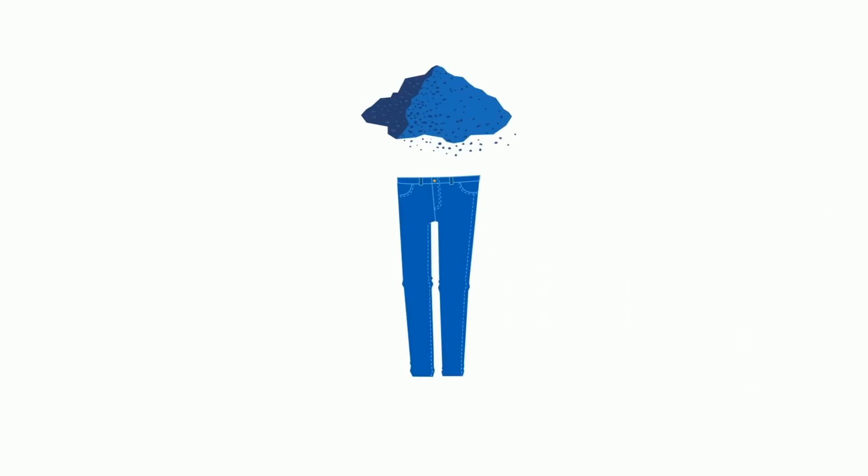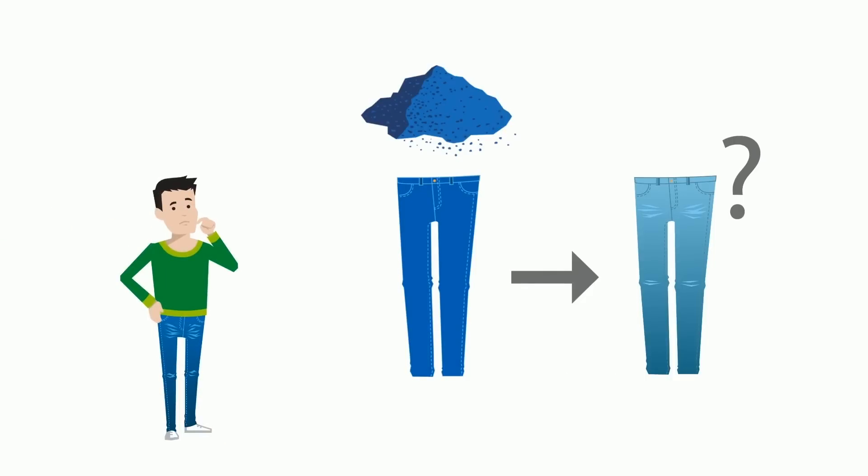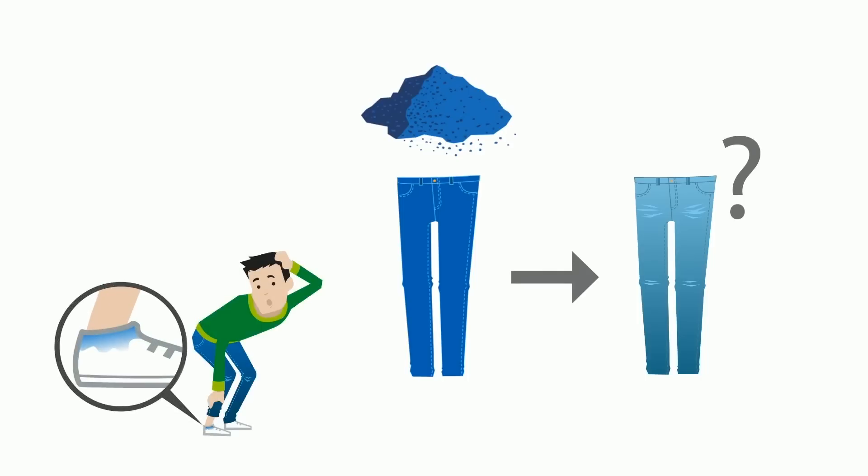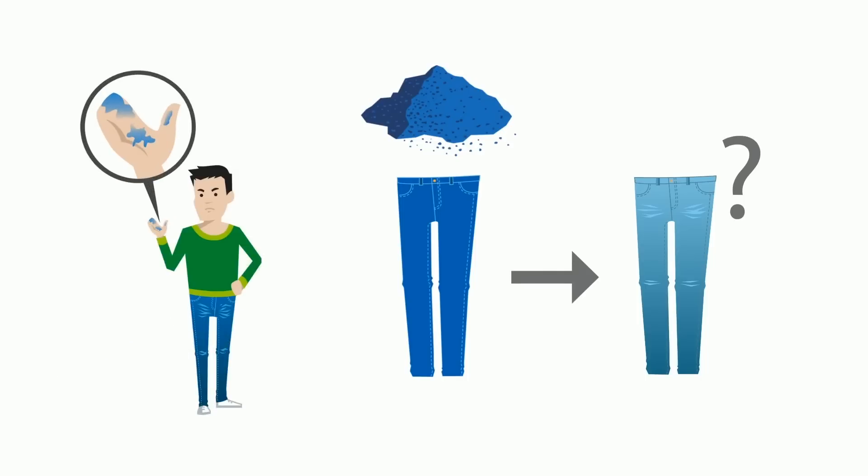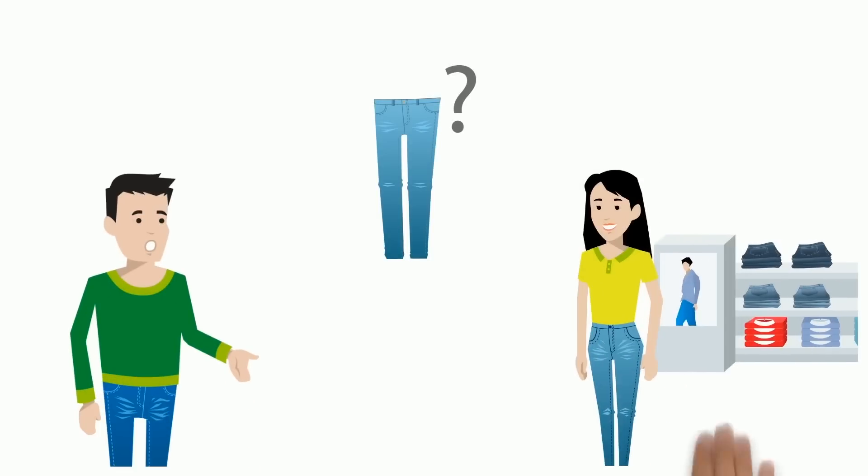Have you ever wondered why the indigo in your jeans gets washed out over time? Sam certainly has. Some of the indigo in his darker jeans has rubbed off on his sneakers and sometimes even on his hands. To uncover this blue mystery, he asks his friend Cheryl, who manages a clothing store.